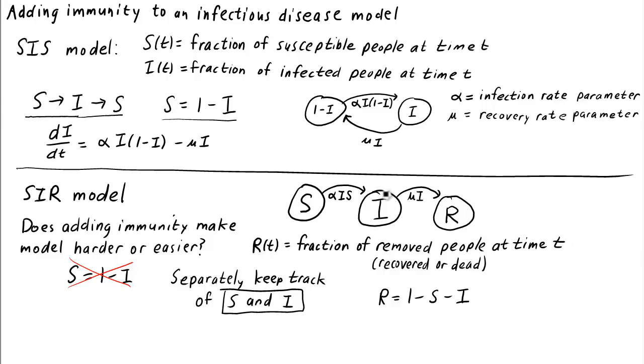The arrows coming into i and leaving i are the same as before, so the equation for i is exactly the same as we had before, only with using s rather than 1 minus i. So di dt equals alpha times i times s minus mu times i.